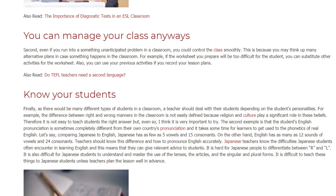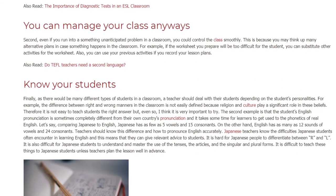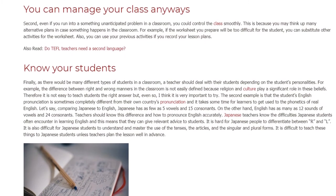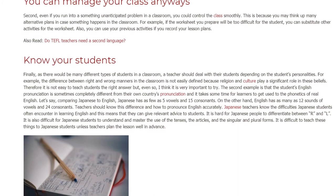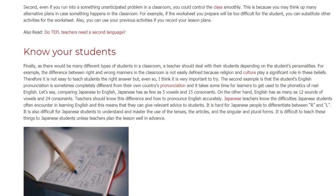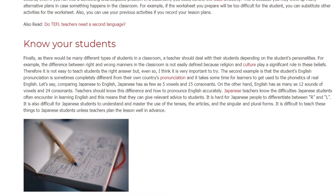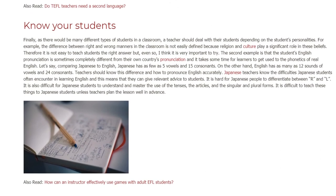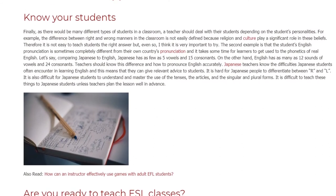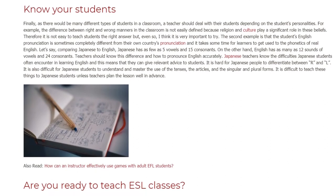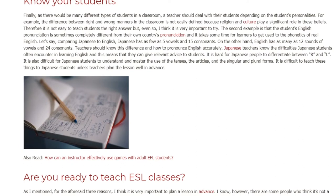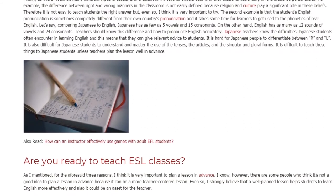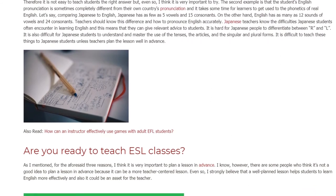The second example is that students' English pronunciation is sometimes completely different from their own country's pronunciation, and it takes some time for learners to get used to the phonetics of real English. Comparing Japanese to English: Japanese has as few as 5 vowels and 15 consonants, while English has as many as 12 vowel sounds and 24 consonants. Teachers should know this difference. It is hard for Japanese people to differentiate between R and L, and it is also difficult for Japanese students to master the use of tenses, articles, and singular and plural forms. It is difficult to teach these things unless teachers plan the lesson well in advance.